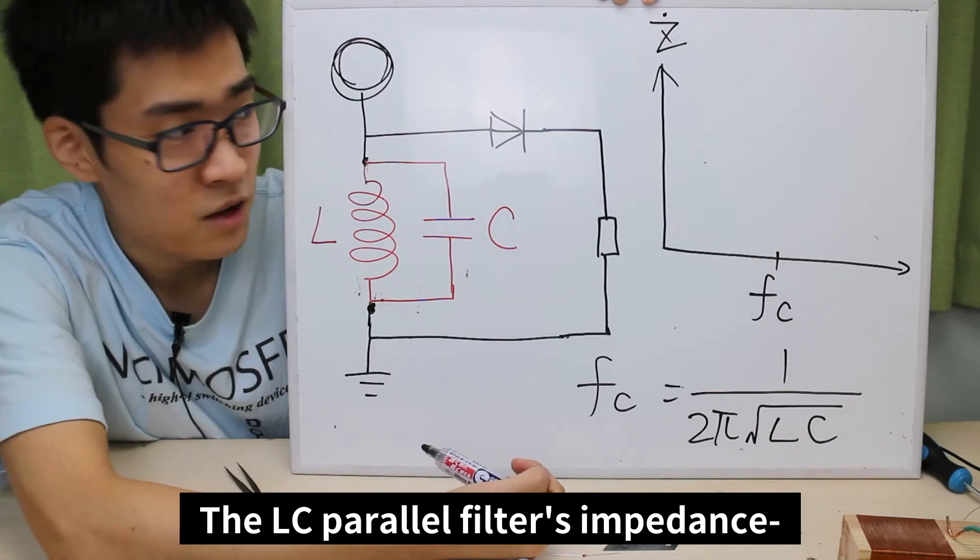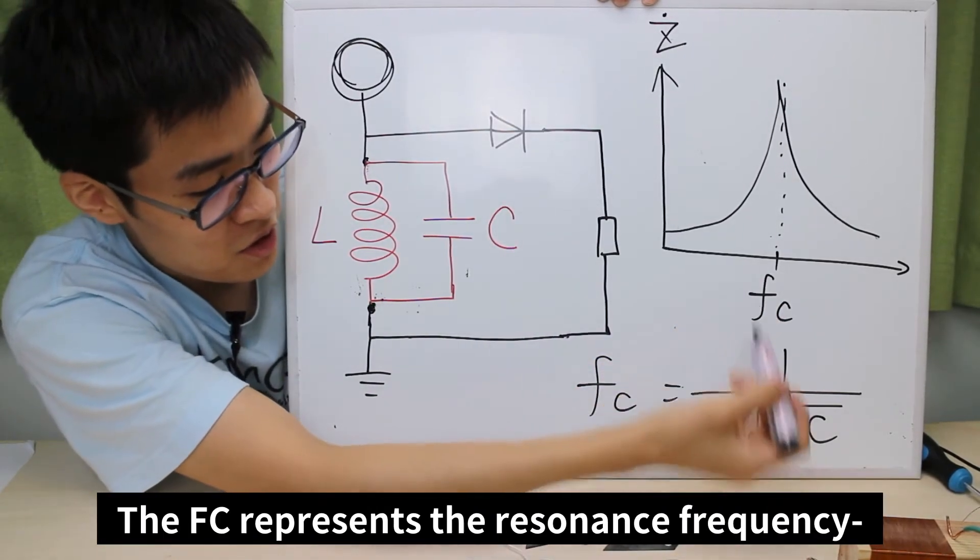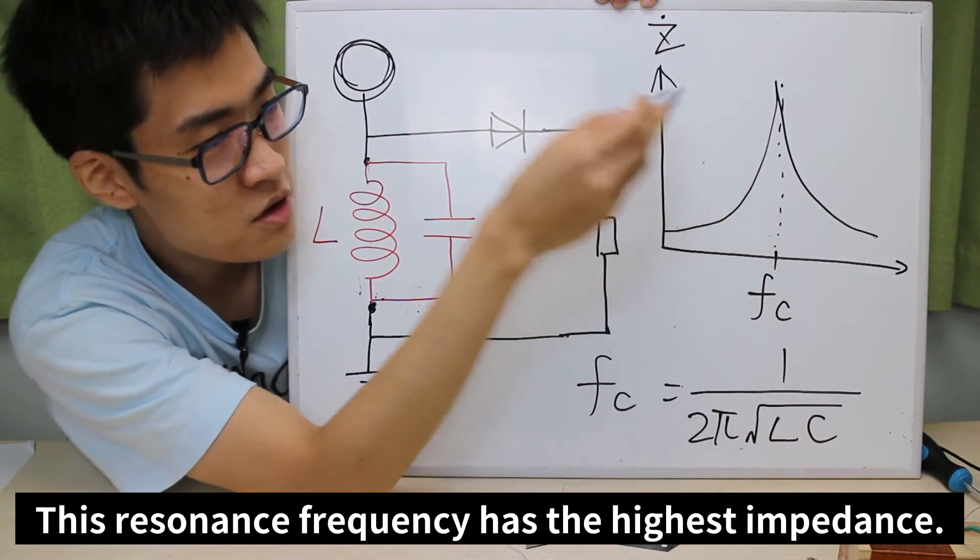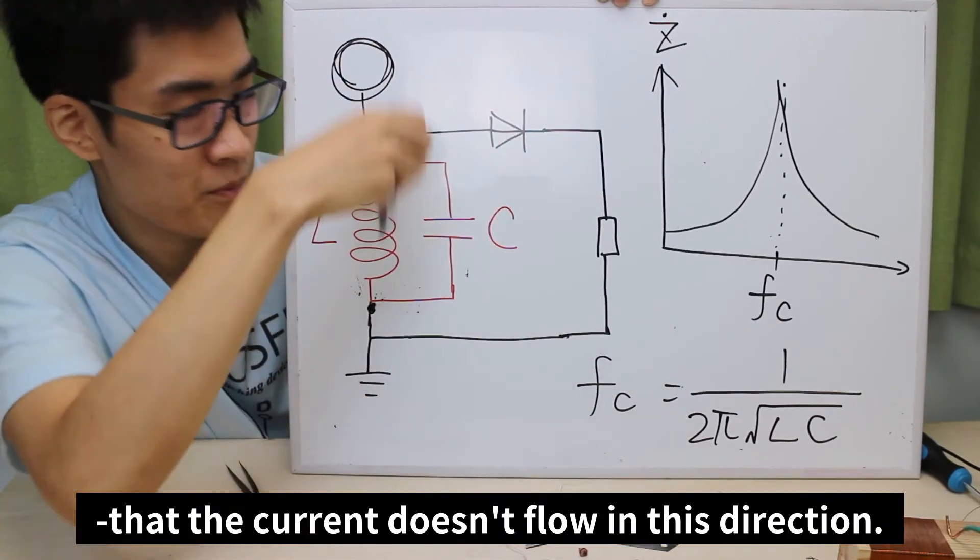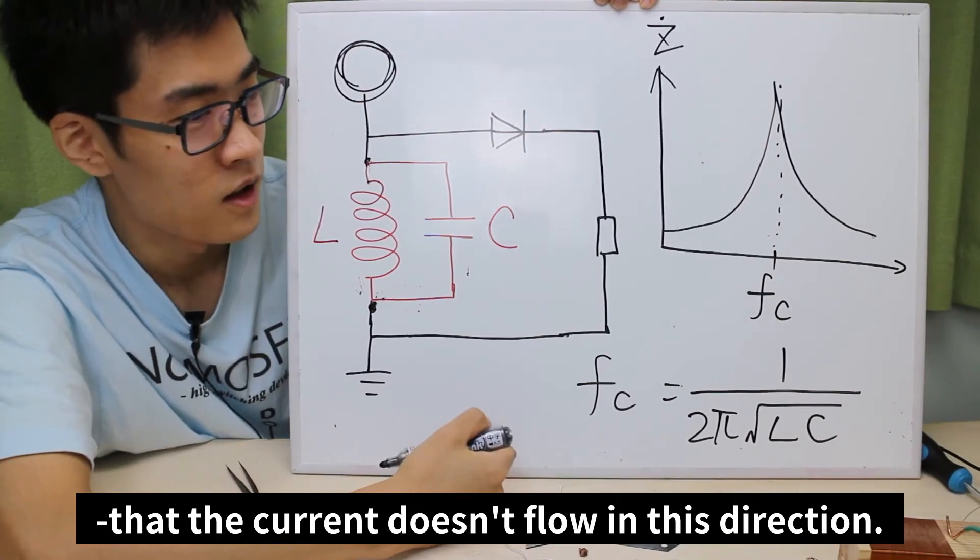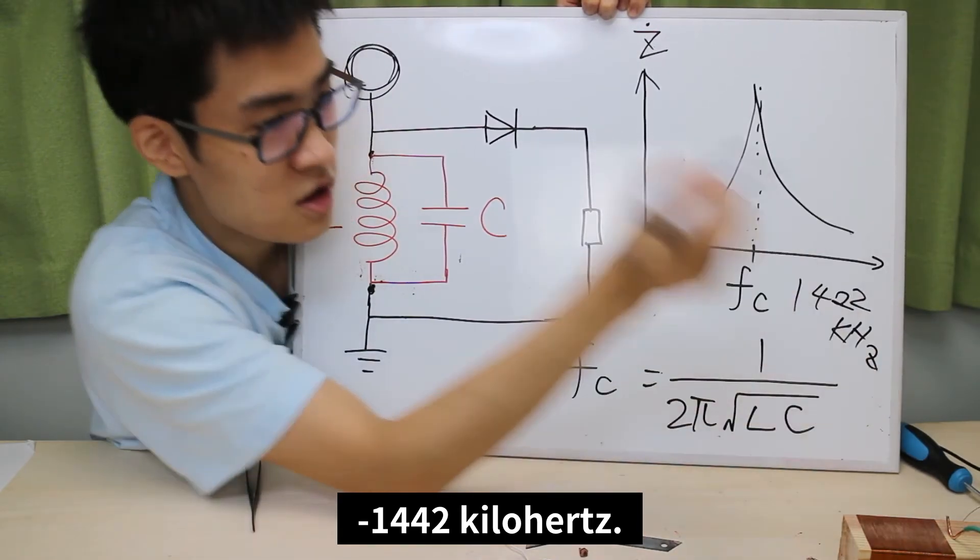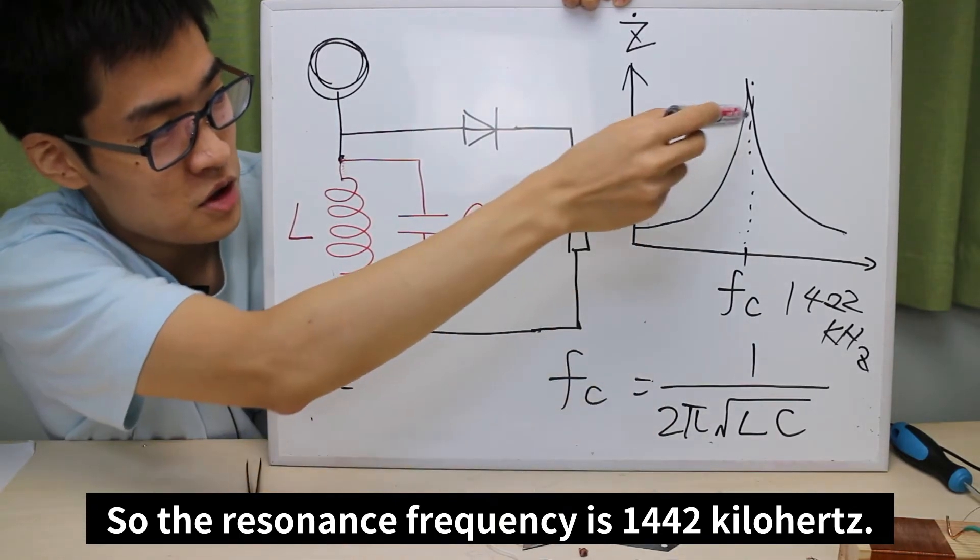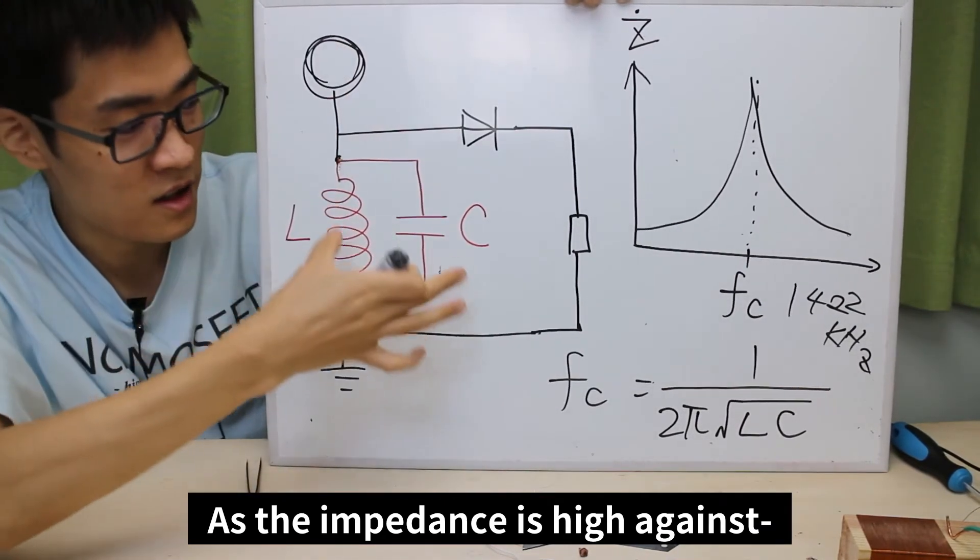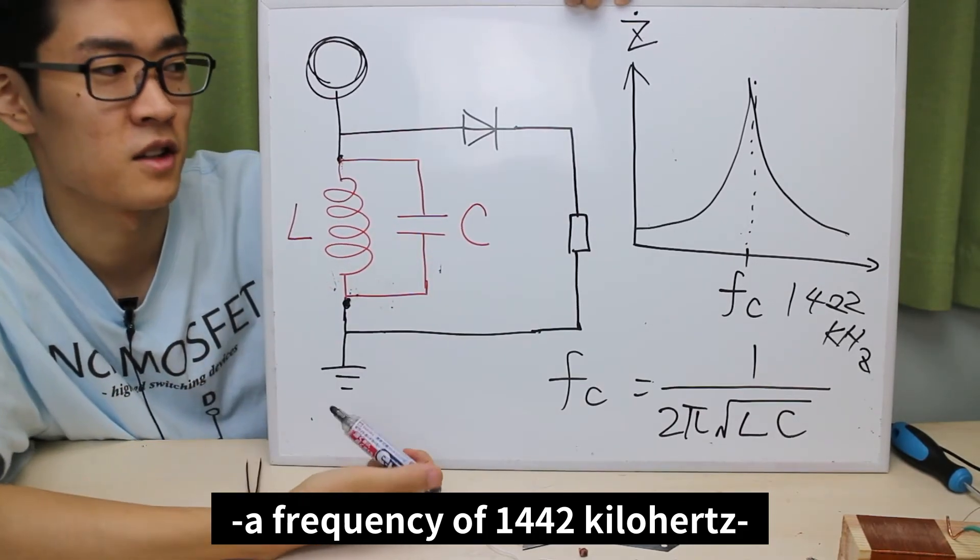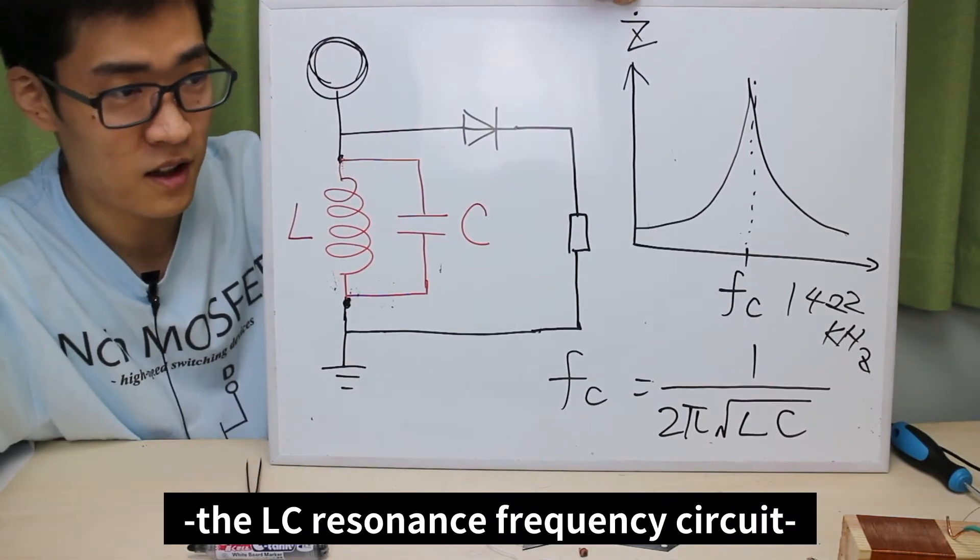The LC parallel filter's impedance looks like this graph. The FC represents resonance frequency and can be found using this equation. This resonance frequency has the highest impedance. A high impedance signifies that the current doesn't flow in this direction. Let's say that the FC frequency is 1442 kHz. So the resonance frequency is 1442 kHz. As the impedance is high against a frequency of 1442 kHz, the frequency doesn't go through the LC resonance frequency circuit and instead goes through the speaker circuit.